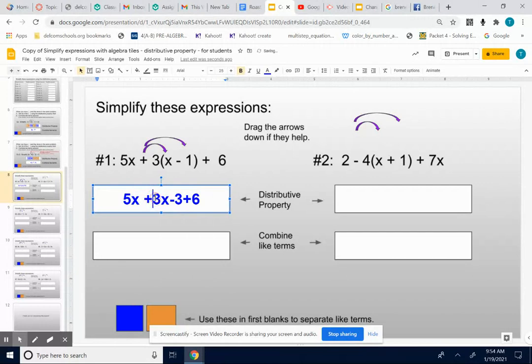So now I have 5x plus 3x minus 3 plus 6. I'm going to try to separate a little bit so my little highlighting squares won't run into each other. Next thing I want to do after the distributive property is I want to combine my x's and my numbers together.